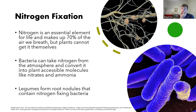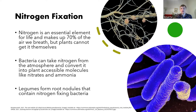Despite nitrogen being such a major part of our atmosphere — up to 70% of the air we breathe — it's fairly inert. There's a triple bond between the two nitrogen atoms, and this bond requires quite a lot of energy to break down, nearly twice as much as an oxygen-oxygen bond. Very few organisms can actually work with nitrogen due to these energy requirements, and very few have the machinery needed to break it down.